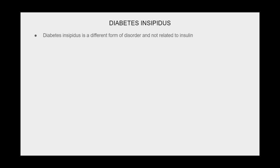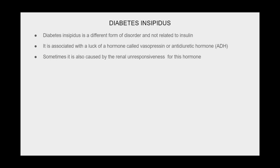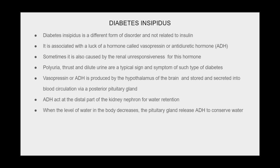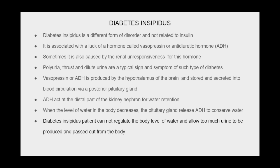Diabetes insipidus is a different form of disorder, unrelated to insulin. It is associated with a lack of the hormone vasopressin, also known as antidiuretic hormone (ADH), or sometimes caused by the kidneys being unresponsive to this hormone. Polyuria, thirst, and dilute urine are typical signs and symptoms. ADH is produced by the hypothalamus and stored and secreted into blood circulation via the posterior pituitary gland. ADH acts on the distal nephron for water retention. When body water decreases, the pituitary releases ADH to conserve water. Patients with diabetes insipidus cannot regulate body water levels and produce and pass too much urine.